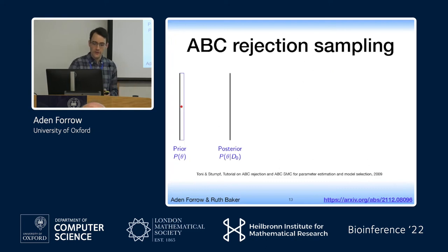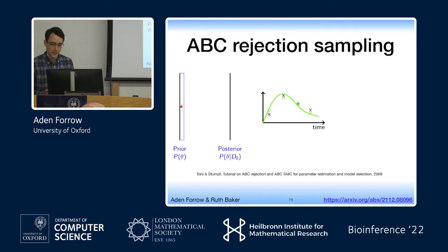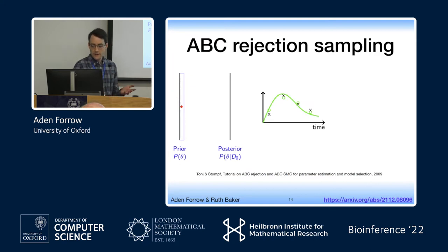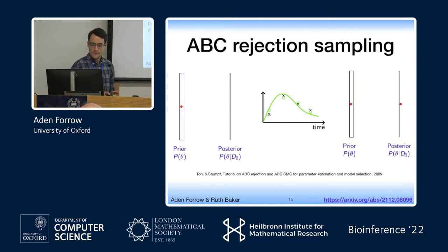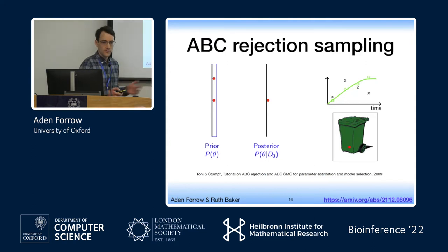As a pictorial version of this, following a nice tutorial by Toni and Stumpf: you sample a red point from your prior, you want to find a posterior, so you simulate from that — that's your simulation result in green. You have some data shown as black crosses, and here your simulated results look pretty close to the observed data, so you keep that sample and add it to your samples from your posterior. In the next iteration, the green simulation results look nothing at all like the observed data, so you throw that parameter value in the bin.